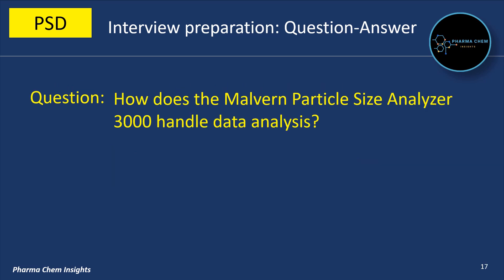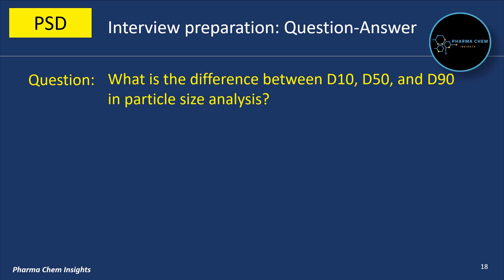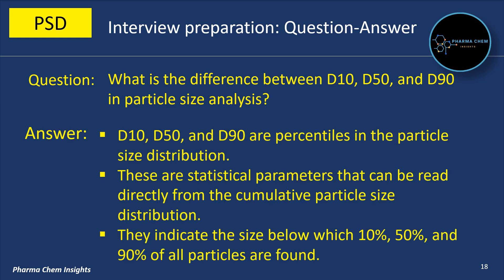How does the Malvern Particle Size Analyzer 3000 handle data analysis? The software provides detailed data analysis including statistical representation, distribution graphs, and trend analysis. What is the difference between D10, D50, and D90 in particle size analysis? D10, D50, and D90 are percentiles in the particle size distribution — statistical parameters read directly from the cumulative distribution, indicating the size below which 10%, 50%, and 90% of all particles are found.